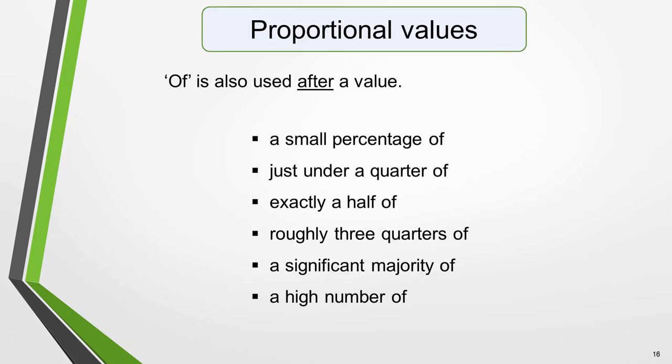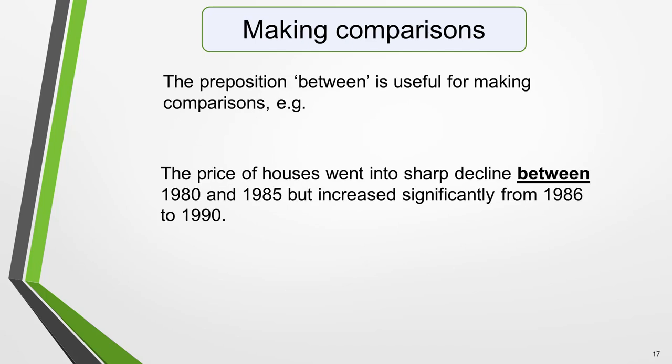'Of' is also used after a value. You'll probably want to use proportional values in your Task 1 essay, so here are some examples: a small percentage of, just under a quarter of, exactly a half of, roughly three quarters of, a significant majority of, and a high number of. Another preposition to learn is 'between', which you'll need to make comparisons, e.g. 'The price of houses went into sharp decline between 1980 and 1985, but increased significantly from 1986 to 1990.'